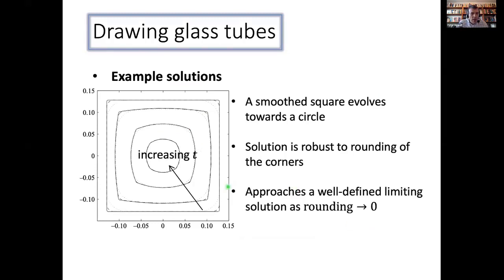So here's an example. This is the example of a square initial shape. So if I just slightly smooth the corners. And as t increases, it evolves towards a circle, as we would expect. And what we demonstrated here is that as you vary that smoothing of the corners, the solution doesn't vary significantly. And that really shows that we can approach a sensible limiting solution if we let the smoothing go to zero. And actually we have an honest to goodness corner there.